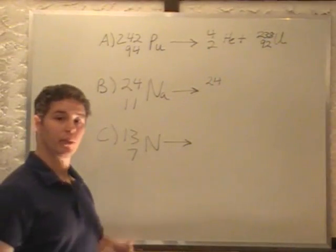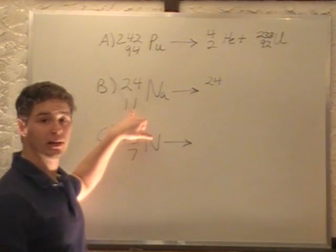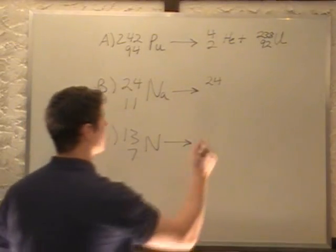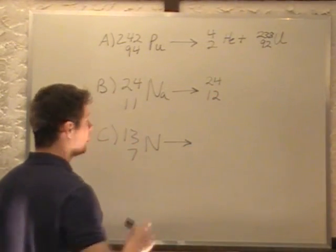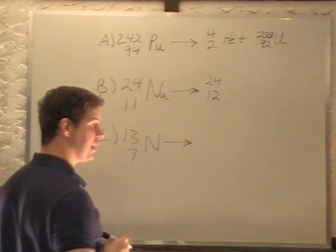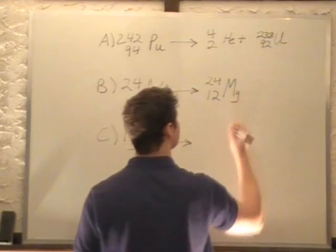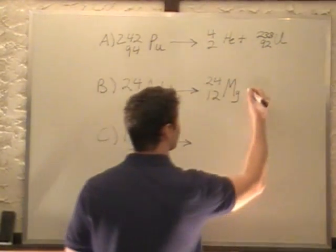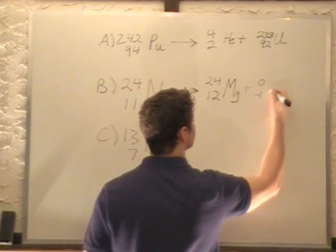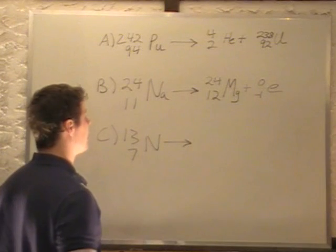We lose a neutron, but we gain a proton, that means that we gain a proton, this goes to 12. So we have 24/12, and 12 happens to be magnesium, and we still have our extra electron. And that's how we show an electron.